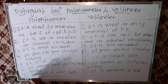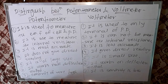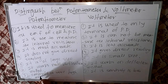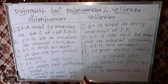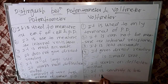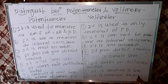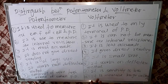Eighth and last point: the potentiometer measures very small PD. In contrast, the voltmeter measures large voltage. This is the distinction between potentiometer and voltmeter.